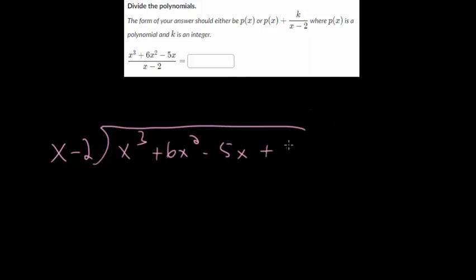So we'll set up our long division. We'll put the x minus 2, since we're dividing by that, we'll put that on the outside. And we have x cubed plus 6x squared minus 5x. And I'm going to put plus zero so that we have our constant term, even though it's zero in this case.